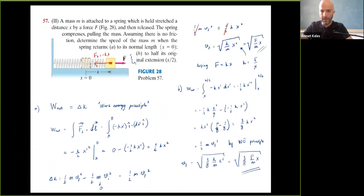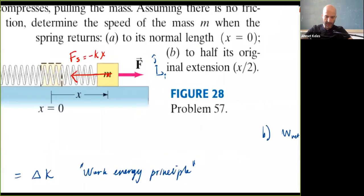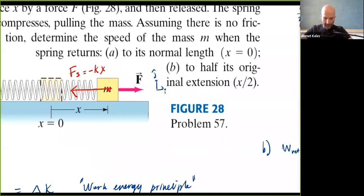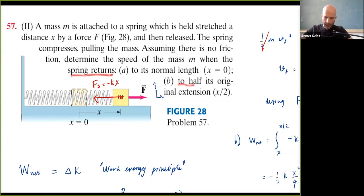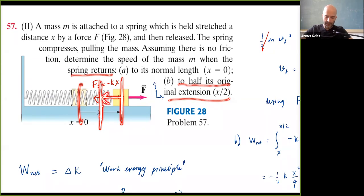At the moment of release, the box is stationary and there is only one force: the spring force. So we apply the work-energy principle from that moment onward. In part (b), I find the total work done by the spring as the mass moves from x to x/2, which equals the final kinetic energy since v_initial = 0.